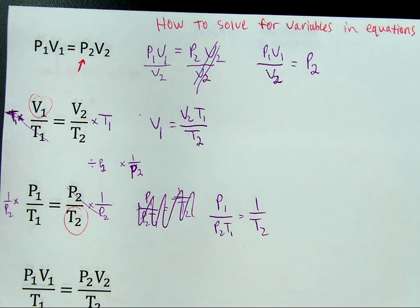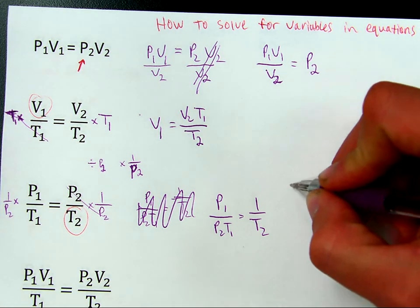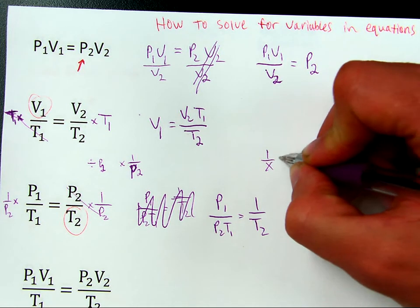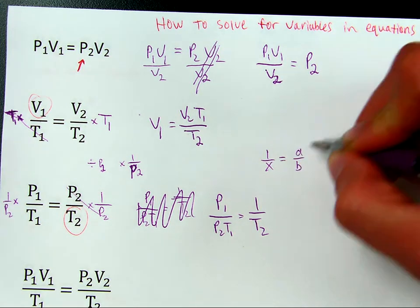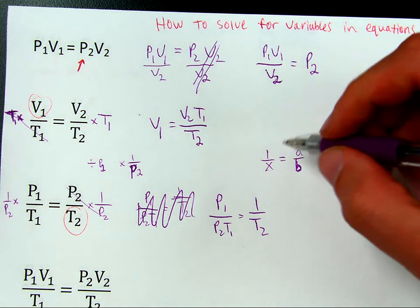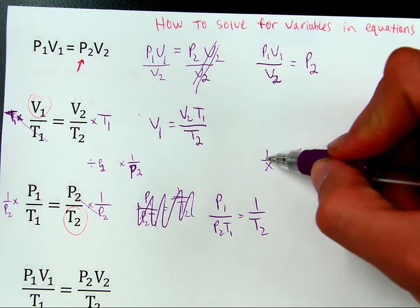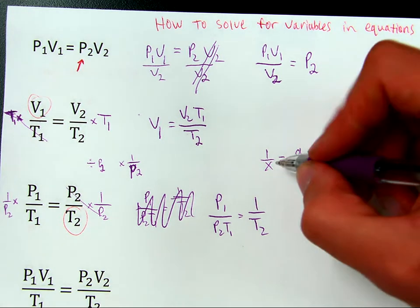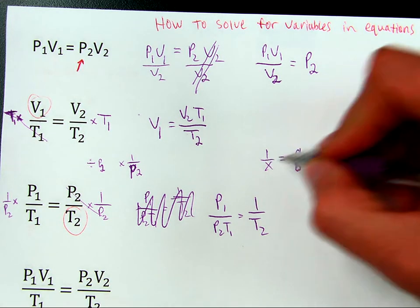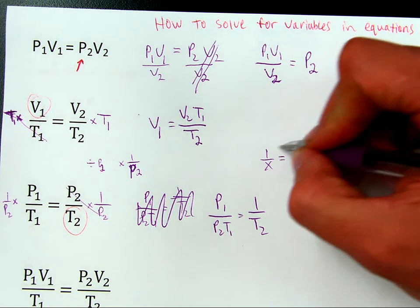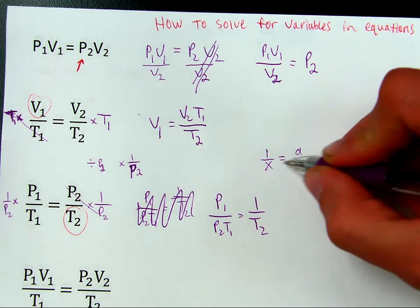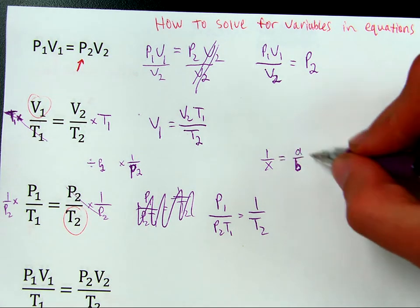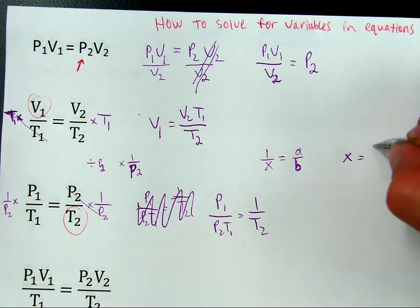And it has to do with this. If you have any number, let's say, 1 over X is equal to A over B, you can do what I just simply like to call flipping the equation. Which is to say, if you flip this upside down, the reciprocal of this is equal to the reciprocal of this. Or, another way of saying it, if you flip this upside down, you get X over 1, which is just X. So, if I flip this side, it becomes just X. Technically, X over 1, but eh, X. If I flip this side, it becomes B over A.